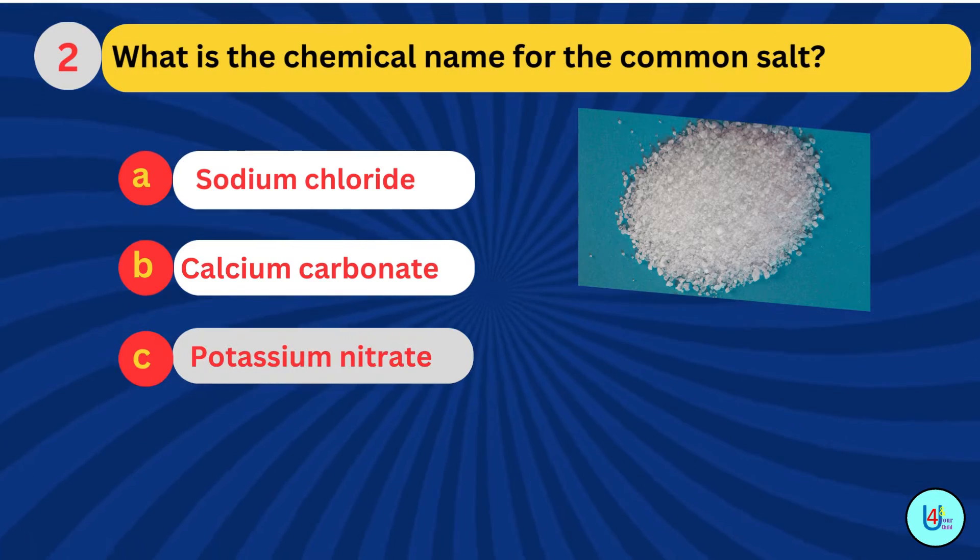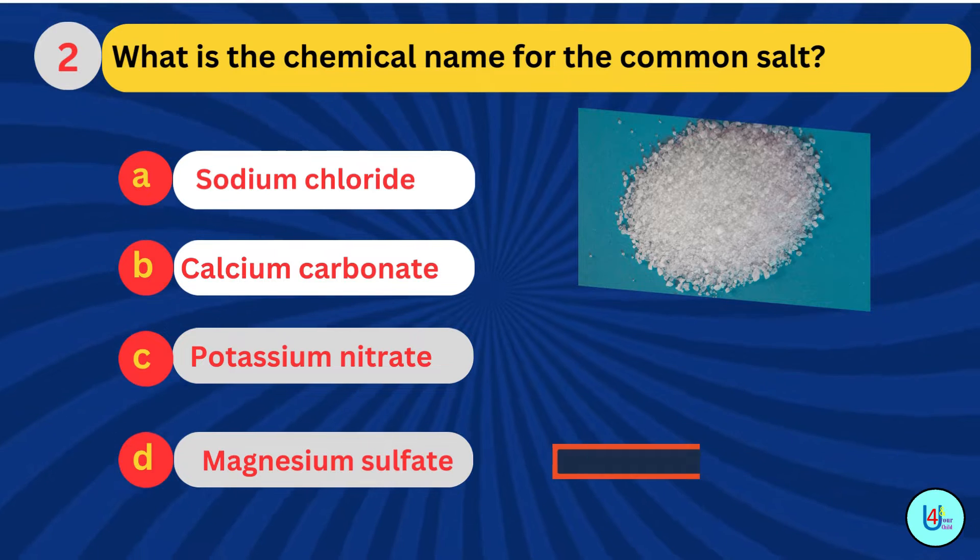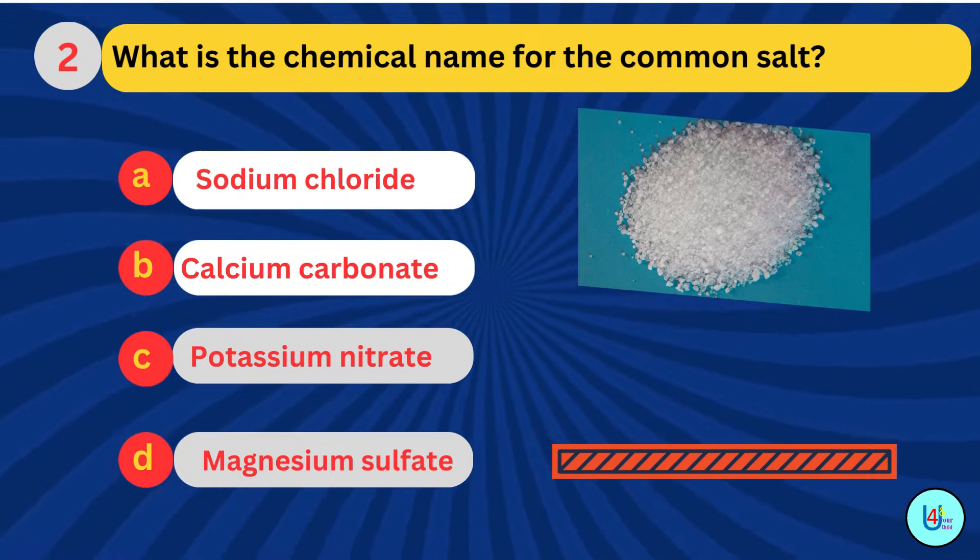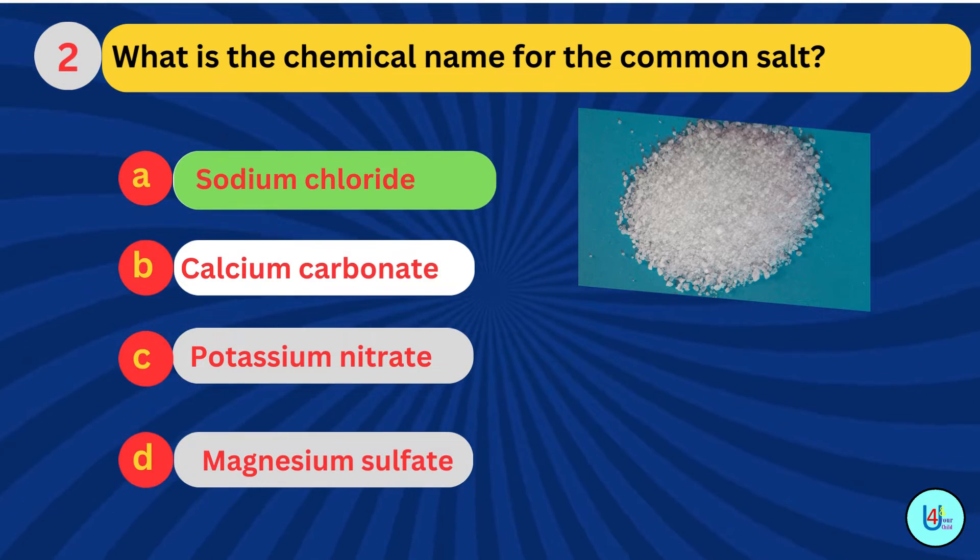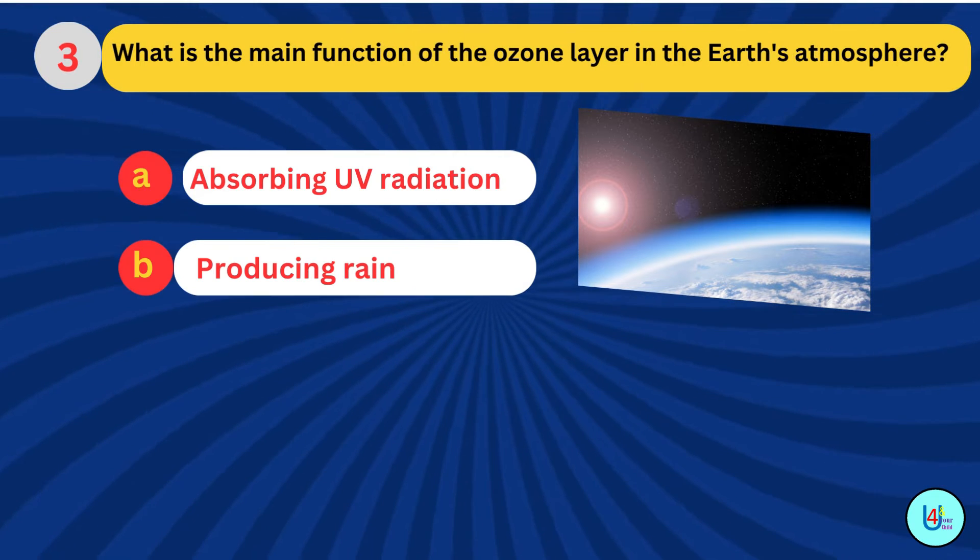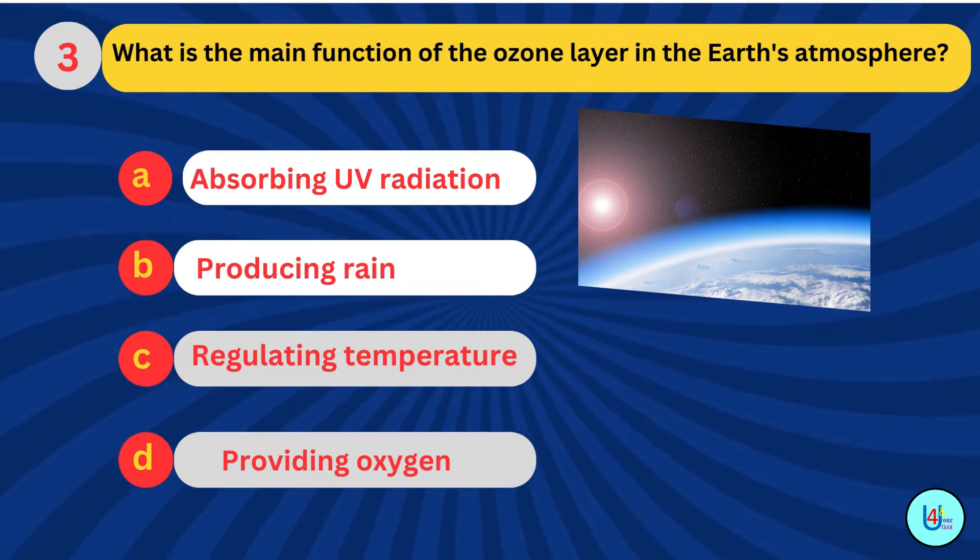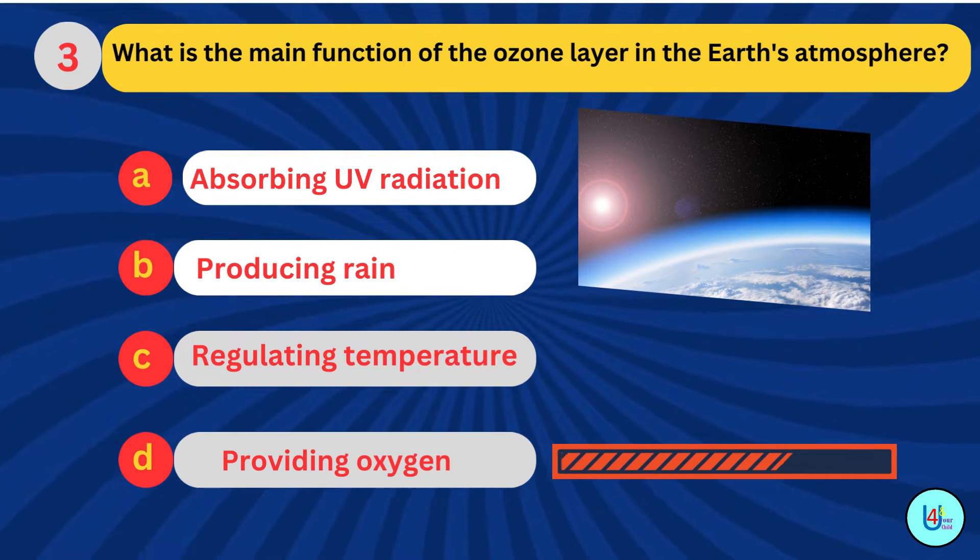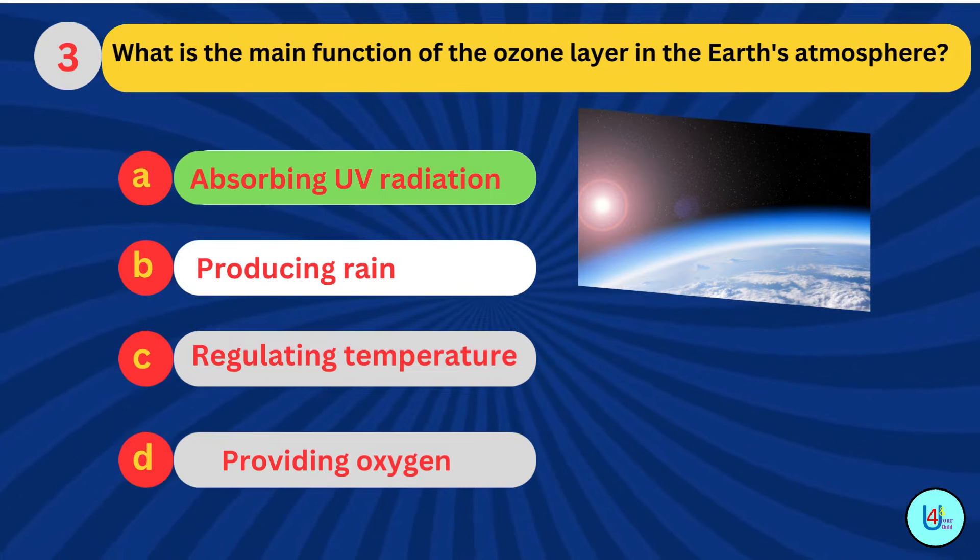What is the chemical name for the common salt? Sodium chloride. What is the main function of the ozone layer in the Earth's atmosphere? Absorbing UV radiation.